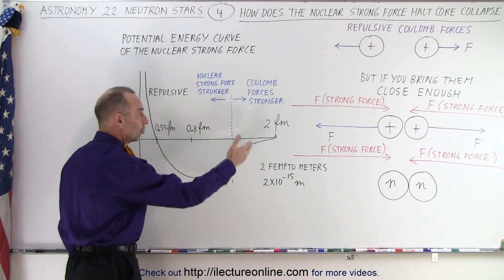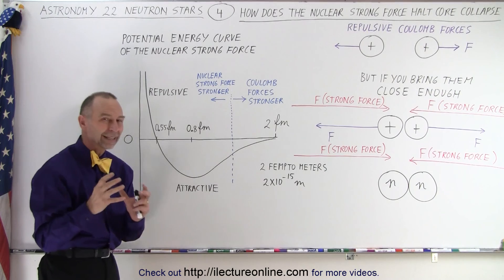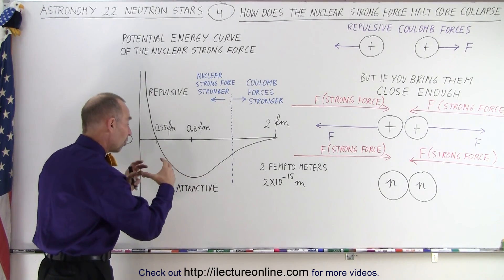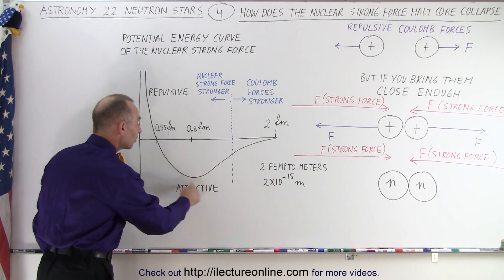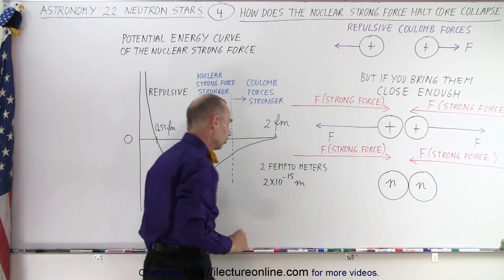So, objects want to be where the potential energy is the lowest. And so, things tend to fall towards the Earth. Well, objects such as nucleons, protons and neutrons, want to be at the lowest point possible. That's where the attractive forces, the nuclear strong force, are the largest. So, this is where the attractive force is the greatest of the nuclear strong force.